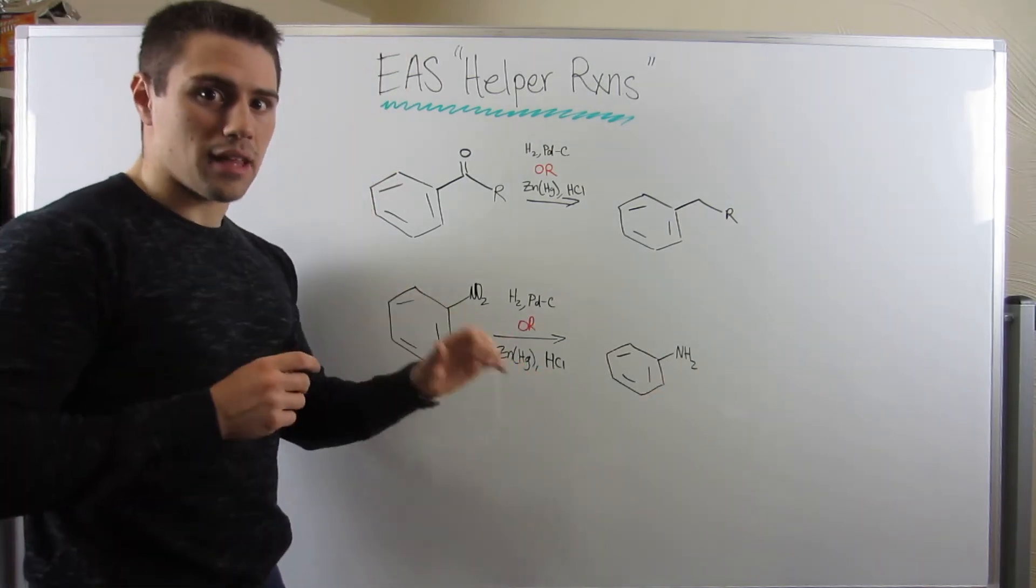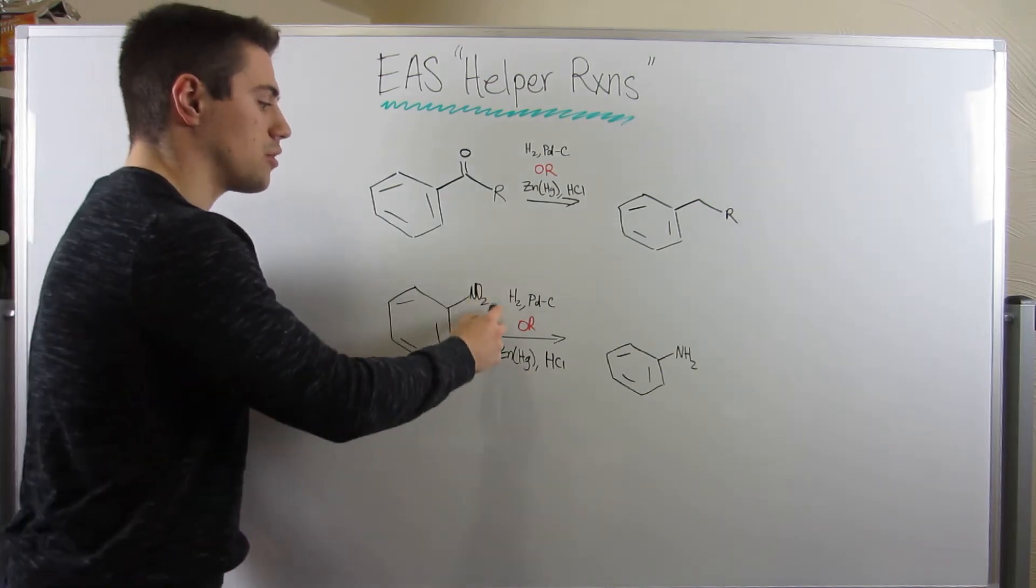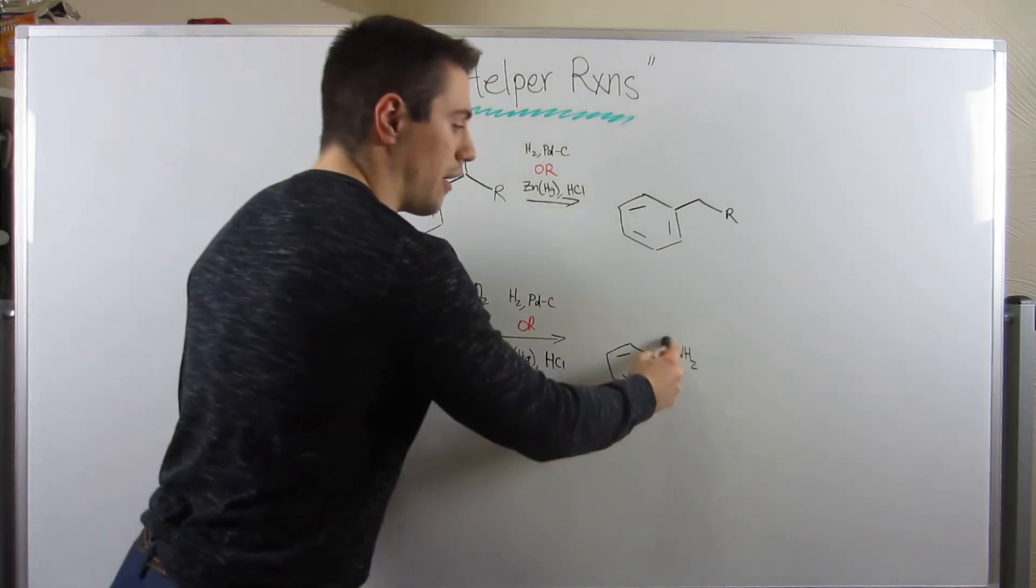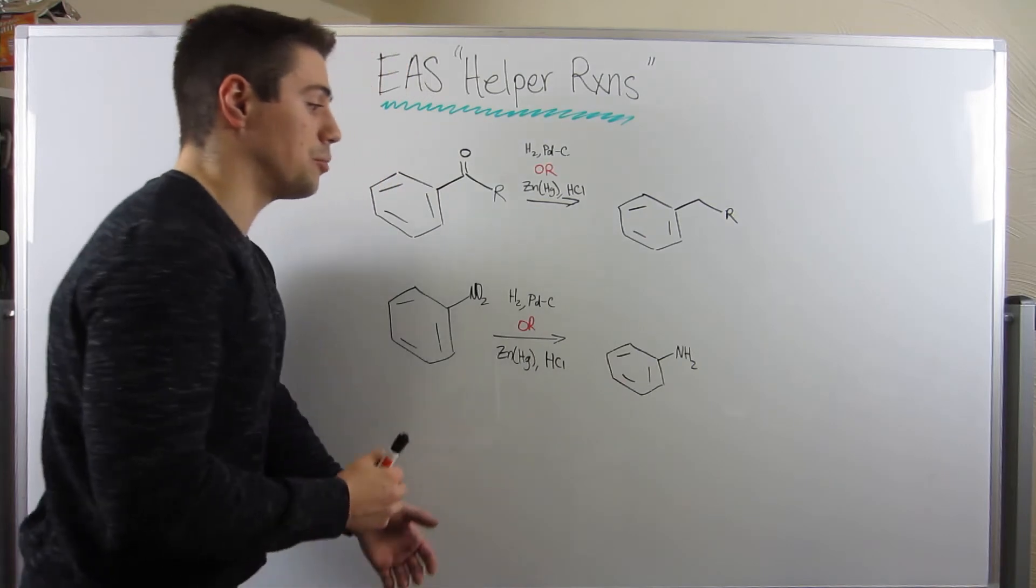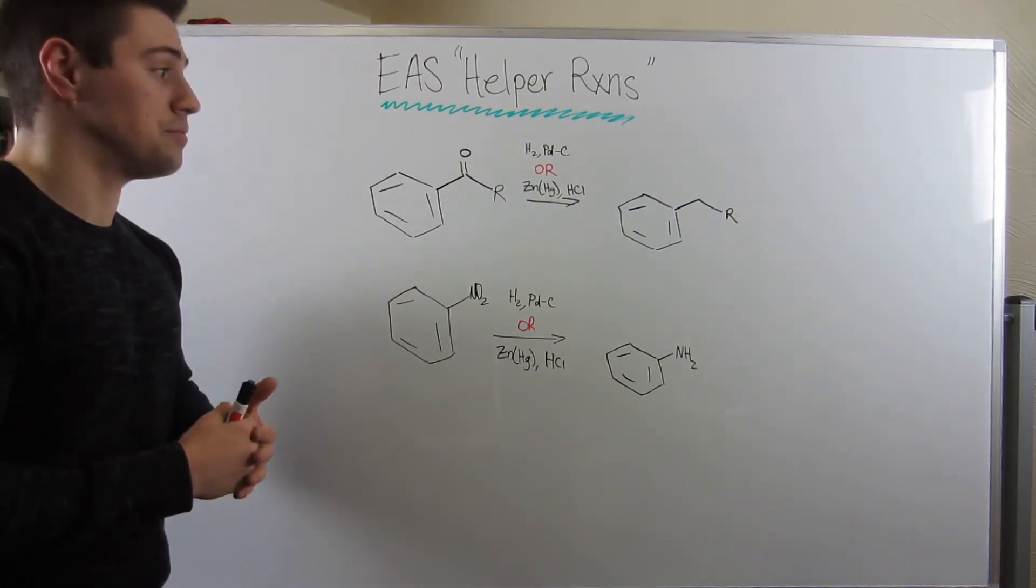So, you use the zinc-mercury amalgam and some HCl. That also accomplishes the same effect. We knew that. We did that in the last video. It takes our electron withdrawing group, meta-director, to a very powerful structure. Strong electron donating group, and ortho-paradirector.